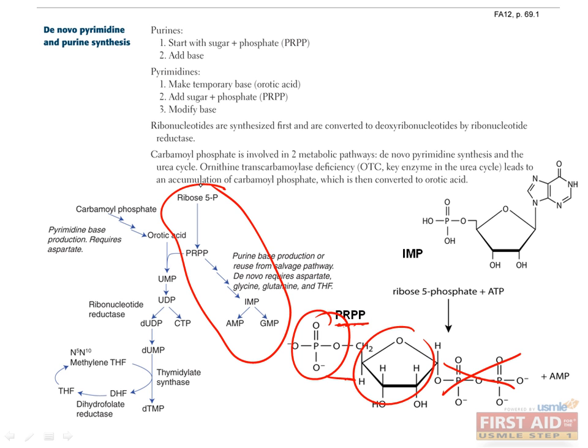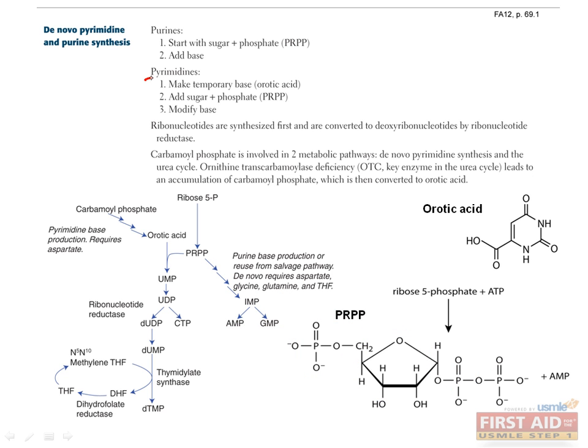In the case of purine synthesis, we're going to build a precursor base called hypoxanthine onto our PRPP, which results in a nucleotide called IMP, or inosine monophosphate. The amino acids aspartate, glycine, and glutamate provide the materials to make this. From here, modification of functional groups on the base will convert this to AMP by converting this ketone to an amine group, or GMP, by adding an amine group here. That's it for purines.